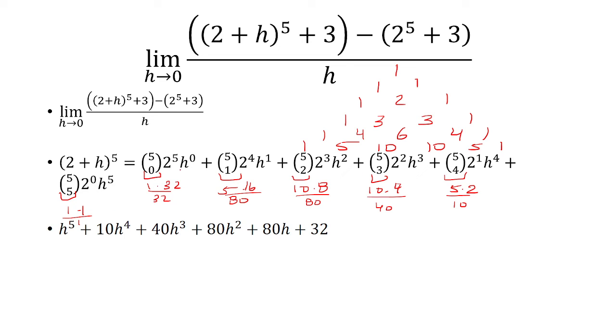So what I did was, I wrote it backwards, so we started with h to the 5th, that's this term, that's coefficient 1, then h to the 4th has coefficient 10, h cubed is 40, h squared is 80, h to the 1st is 80, and then the constant here is 32.